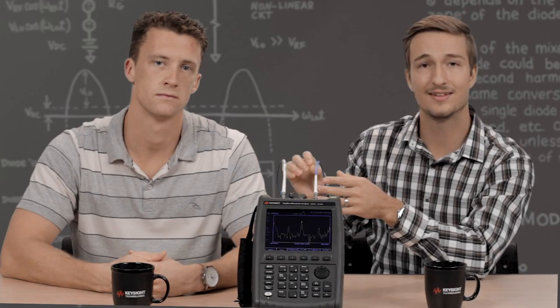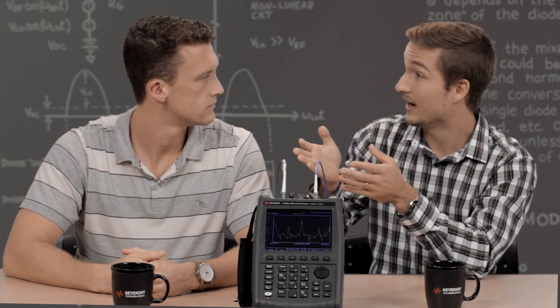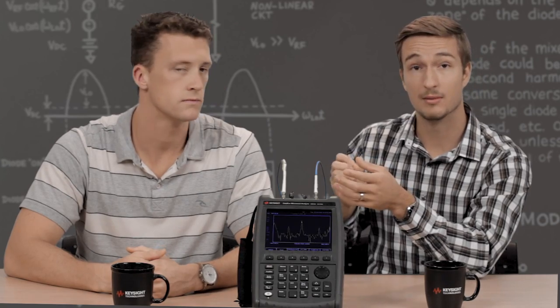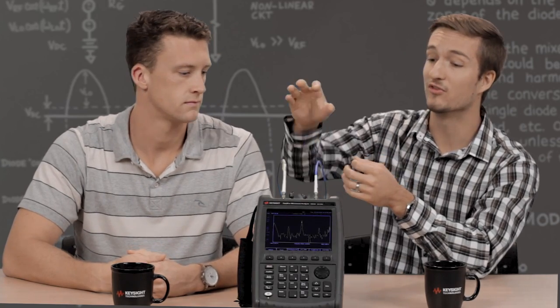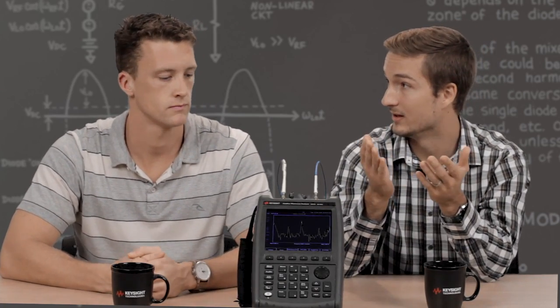And when that signal hits a discontinuity in the cable from, let's say, some damage or a kink in the cable, the signal power is actually reflected back towards port one. And the FieldFox is going to use that information to tell us exactly where there is damage within the cable.